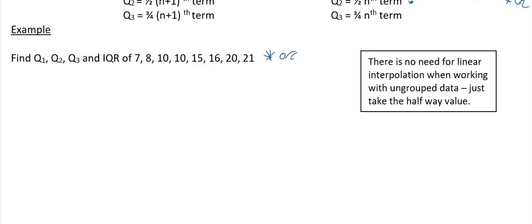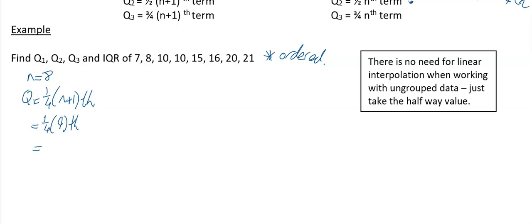Since the values are already in ascending order, there's no need to reorder them. If they were not in ascending order, you'd need to put them in order — you can't find the lower quartile or median otherwise. Here we have eight values, so n = 8. Our Q1 (lower quartile) is (1/4) × (n+1) = (1/4) × 9 = 2.25, so the 2.25th value.